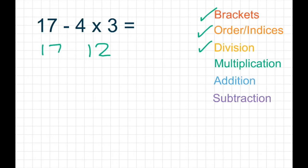So it's going to be 17 take away 12. We don't have any addition, so we miss that step out. And we finish by doing our subtraction. So 17 take away 12 equals 5.